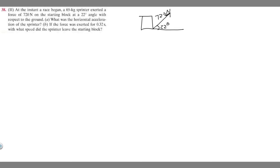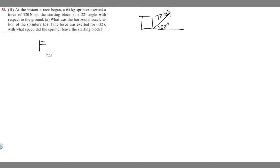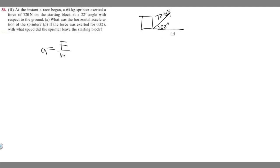Let's start with Part A: the horizontal acceleration. You need to know that force equals mass times acceleration, and we're solving for acceleration. If we divide both sides by M, we get A equals F over M. So what we need to do is find the force in the horizontal direction and then divide it by the mass, because we're trying to find the horizontal acceleration.